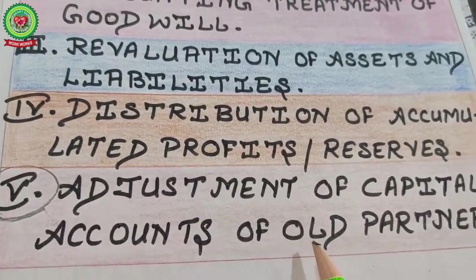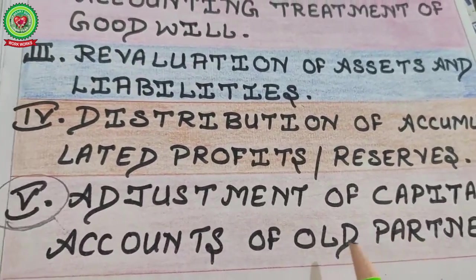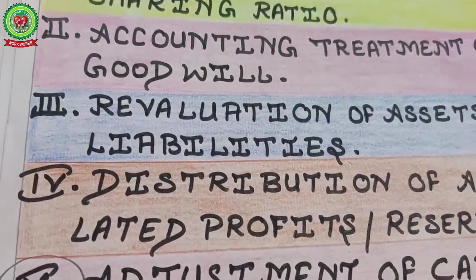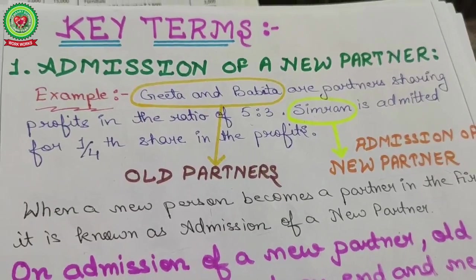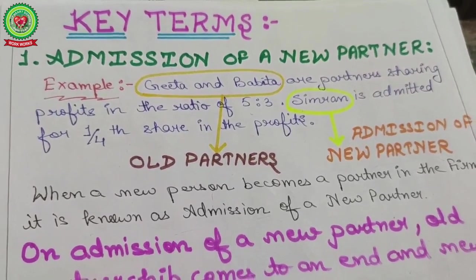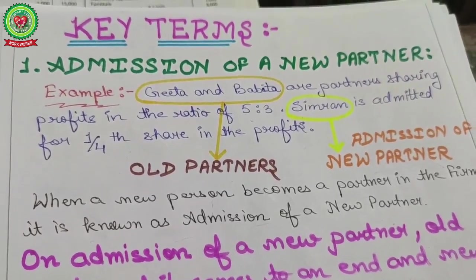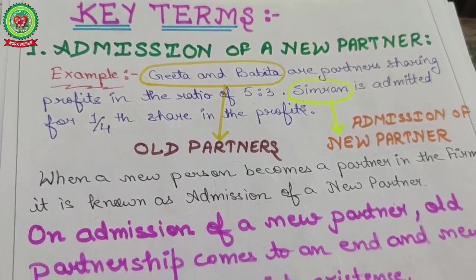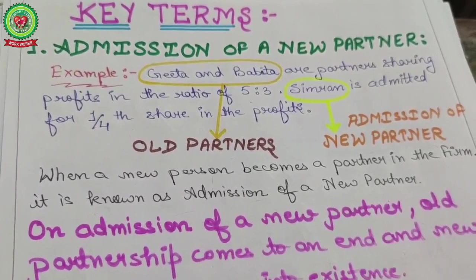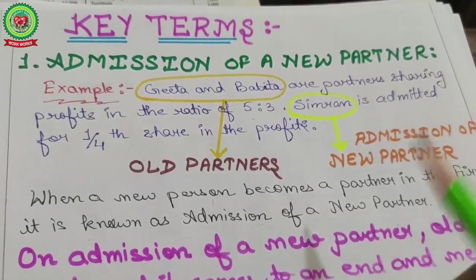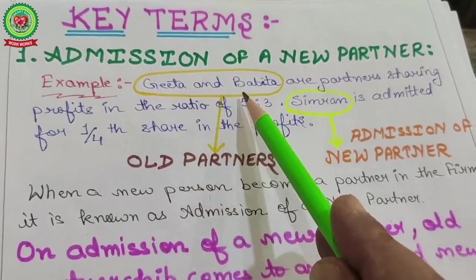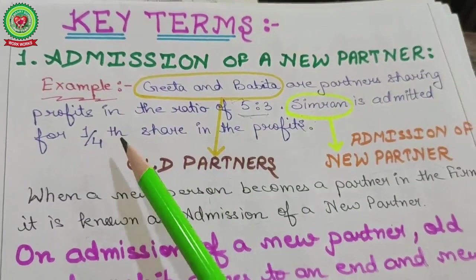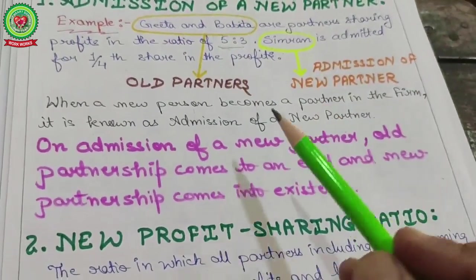Our today's topic is adjustment of capital accounts of old partners. Before starting, let's see the key terms. First, admission of a partner: when a new person becomes a partner in the firm, it is known as admission of a partner. For example, Gita and Babita are old partners with profit sharing ratio 5:3, and Simran is the new partner with a share of one-fourth.